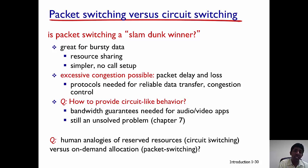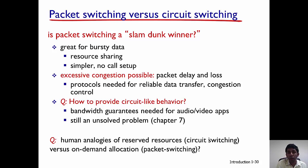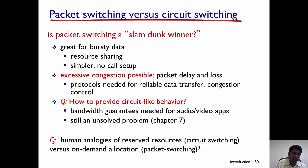On the other hand, you cannot get performance guarantees in a packet switch network, whereas in a circuit switch network, once the call has been set up and resources allocated, they cannot be taken away — giving much more guaranteed performance. In packet switch networks, there can also be excessive congestion leading to packet delay and loss. So there is no clear winner; both have advantages, but the internet mainly uses packet switching because it can accommodate a large number of users, at the cost of no performance guarantees.